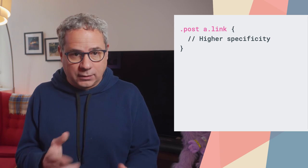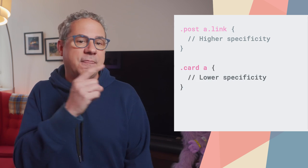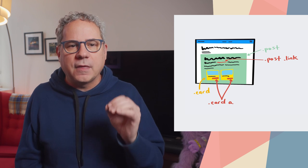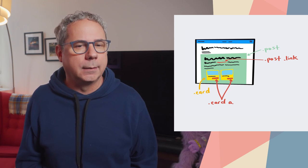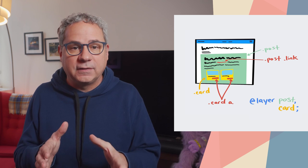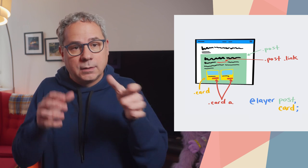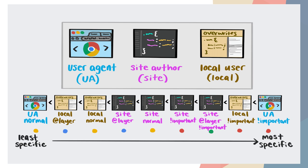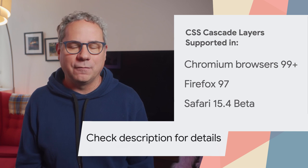For example, this selector here has a higher specificity than this selector. If you're trying to style a link inside a card within a post, you'll find that the more specific selector will be applied. But by using the at-layer rule, you can be more explicit about the style specificity of each and make sure that the link style in your card overrides the link style in your post. This is because of cascade precedence — layered styles create new cascade planes. Cascade layers using the CSS at-layer rule are supported in Chrome 99, Firefox 97, and Safari 15.4 beta. Check out Yuna's article linked in the description for more information.